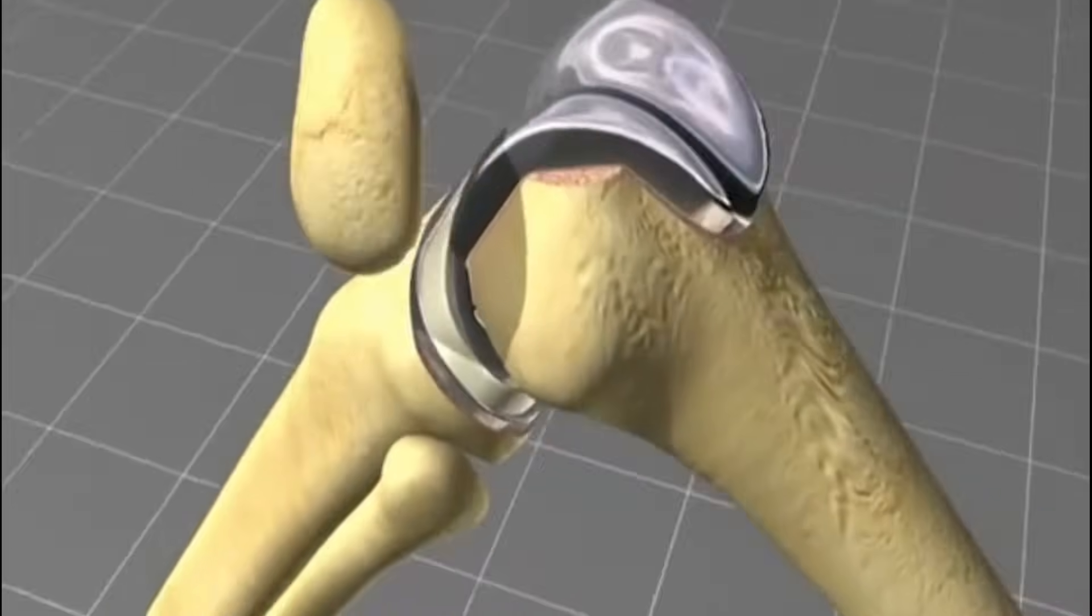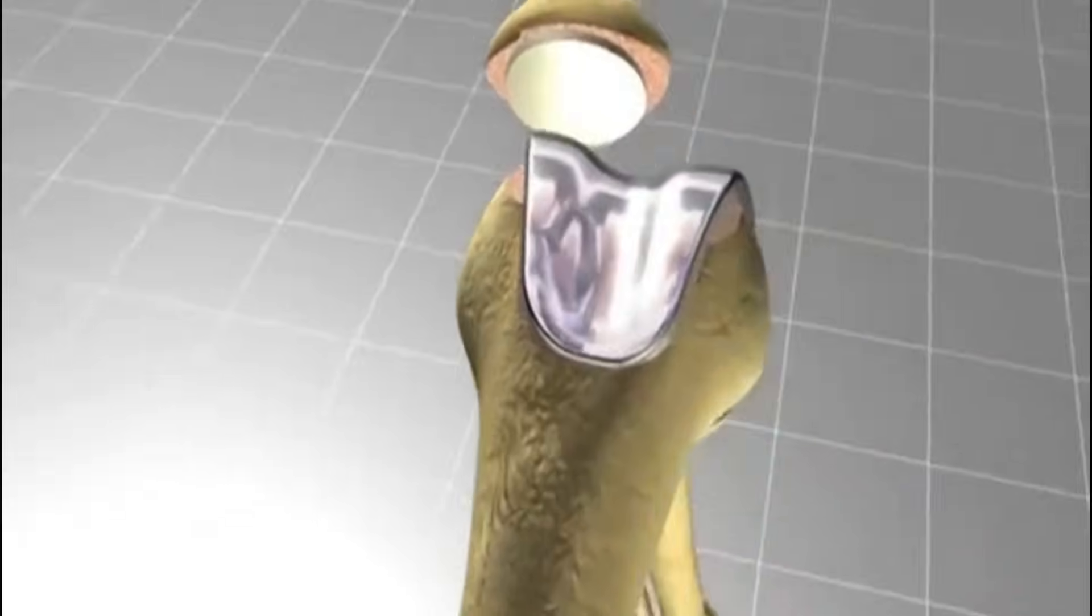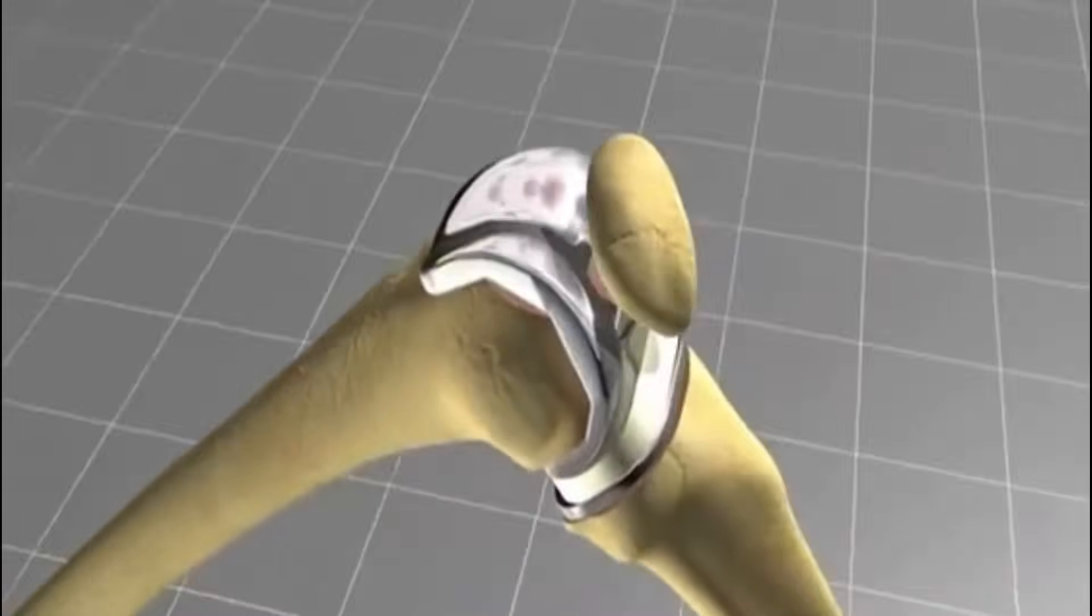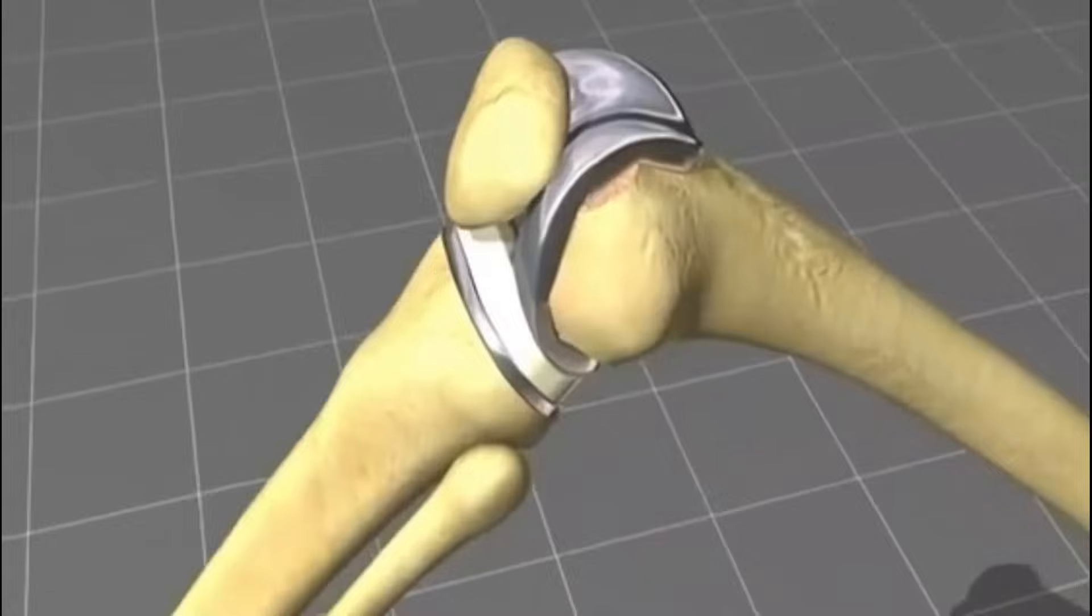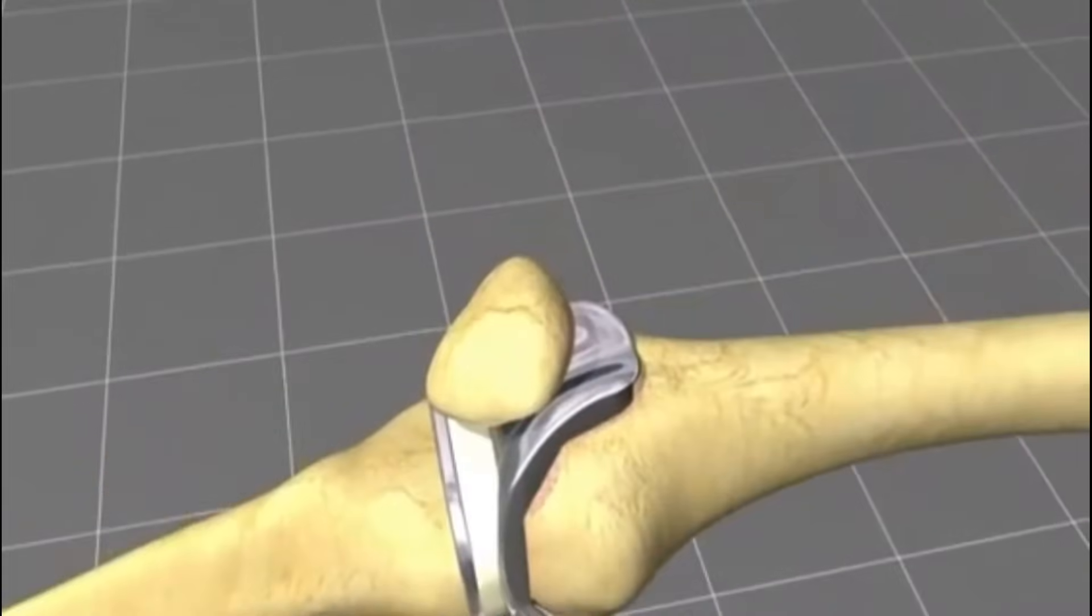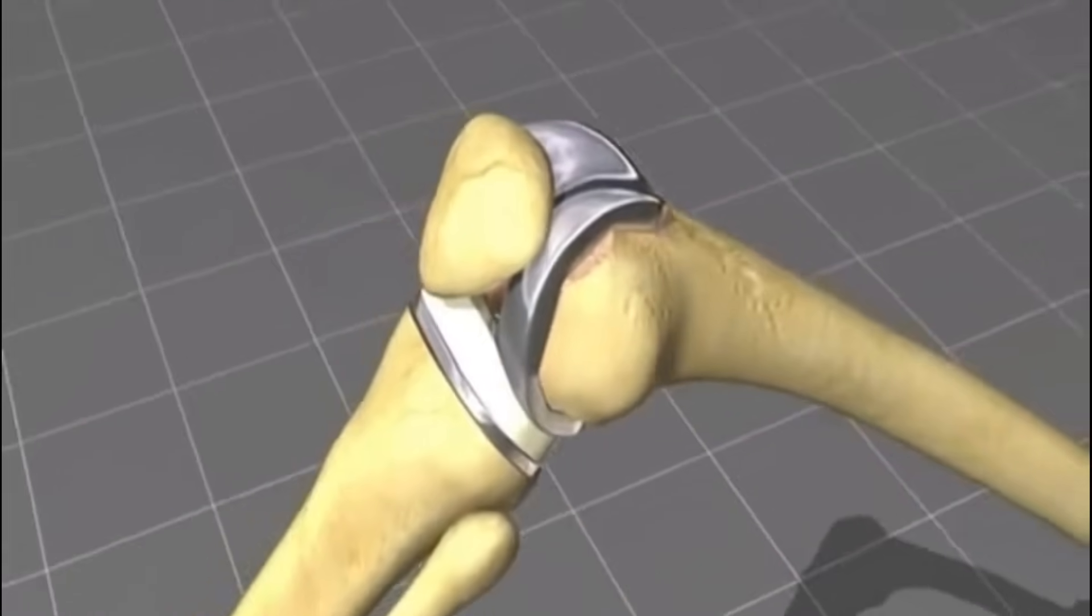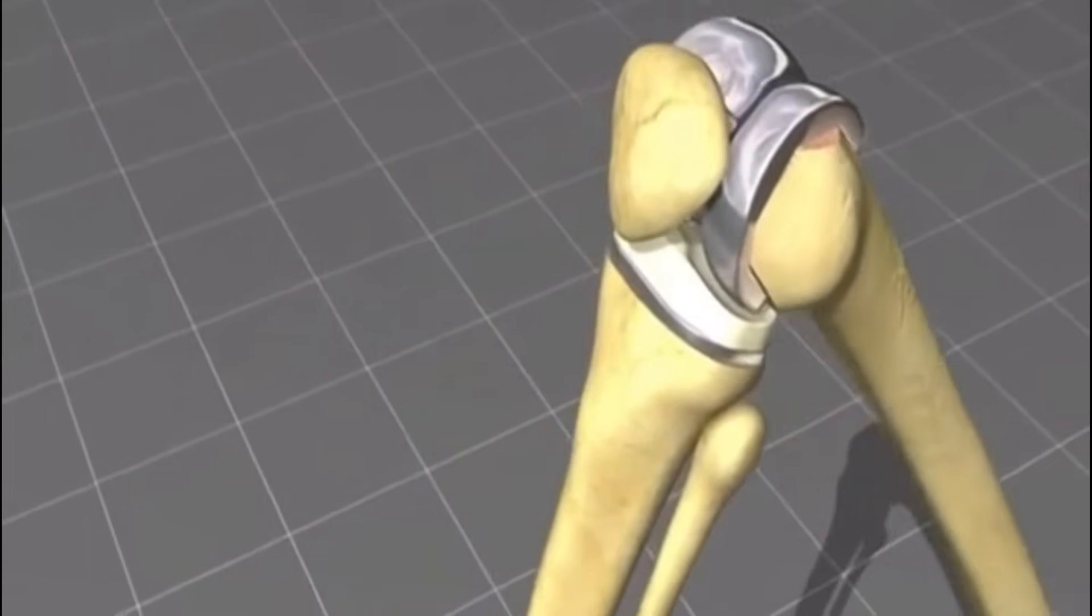An inlay between femur and tibia is positioned which consists of highly stable polyethylene. The kneecap is reduced and the range of motion of the joint is checked once more.